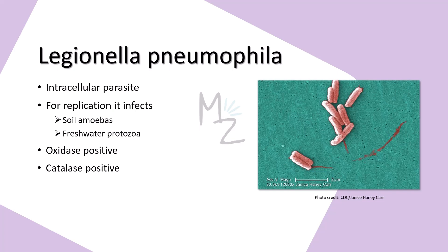Legionella pneumophila is an intracellular parasite. For replication, it infects soil amoebas and freshwater protozoa, which help it replicate to large numbers. These amoebas also enhance its survival, and under adverse environmental conditions the amoebas encyst, ensuring both their own survival and the survival of intracellular Legionella. Legionella pneumophila is oxidase positive and catalase positive. Catalase is an enzyme released by certain bacteria that converts hydrogen peroxide into water and oxygen — oxygen is responsible for forming bubbles. Whenever we perform a catalase test, Legionella pneumophila always gets a positive result.